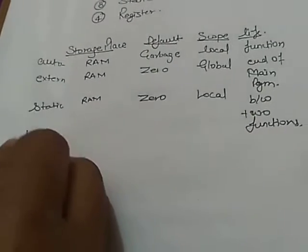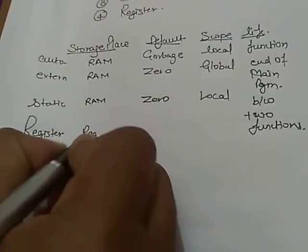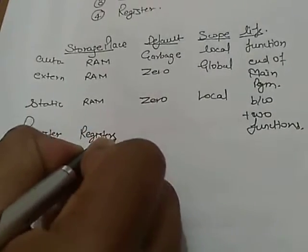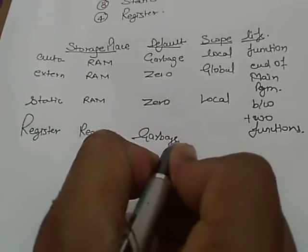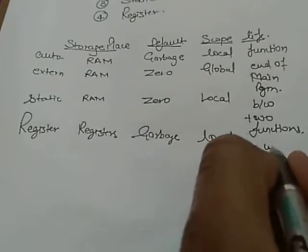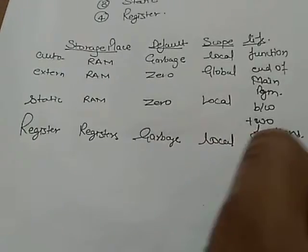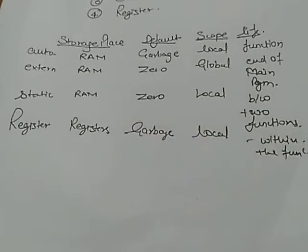Now, last class is register class. Its storage is CPU registers. Default value is garbage value. The scope is local and its lifetime is within the function.